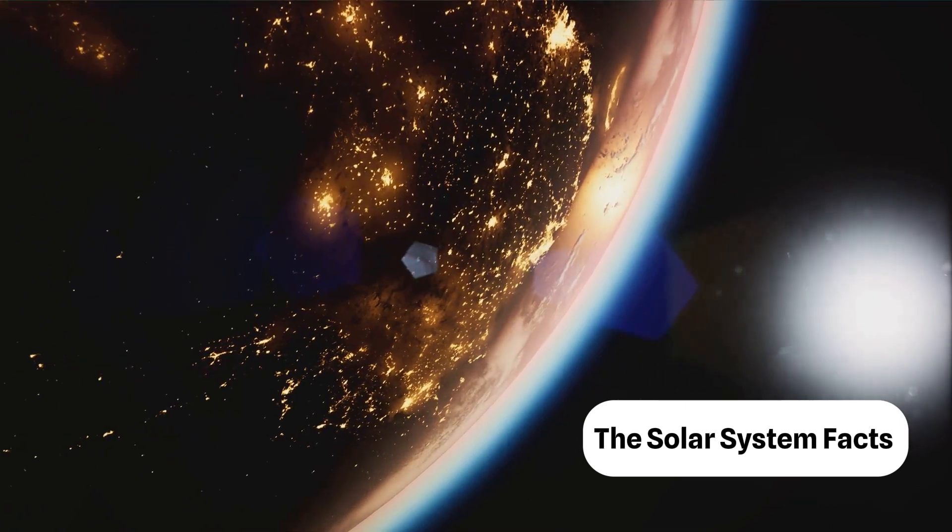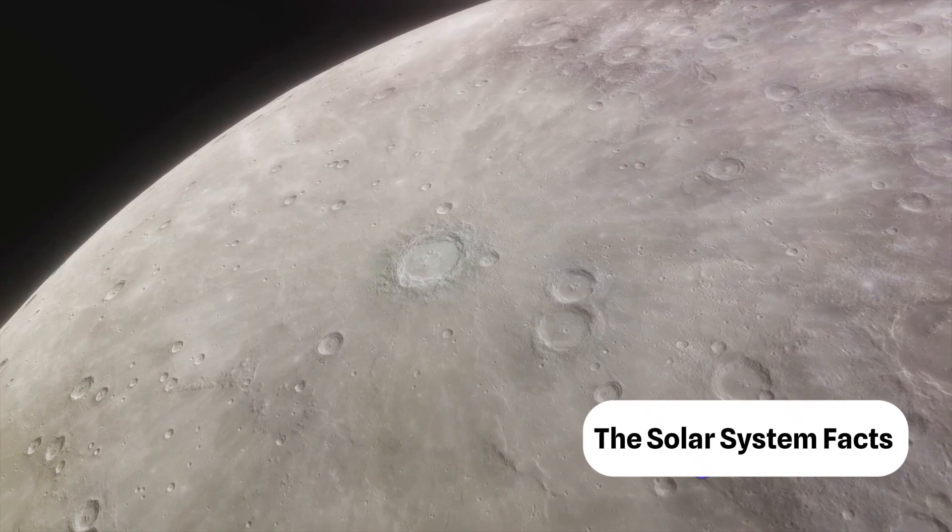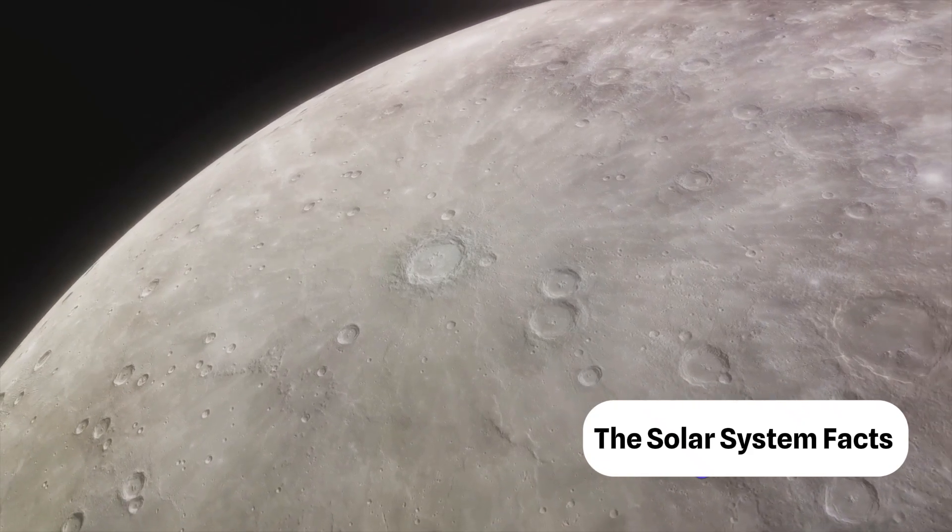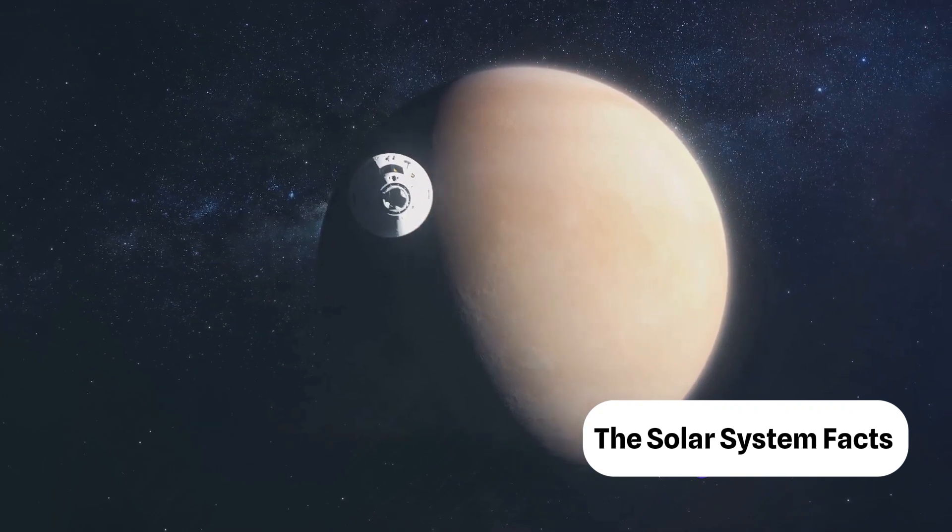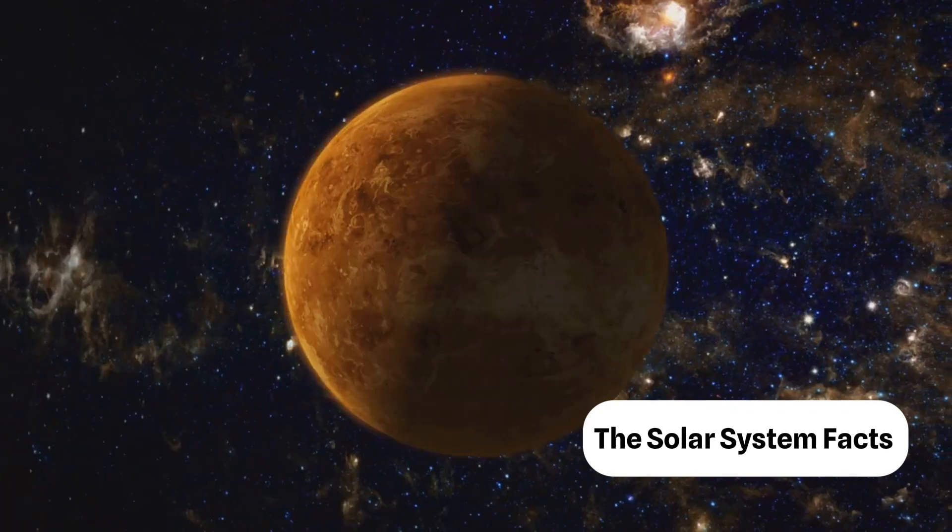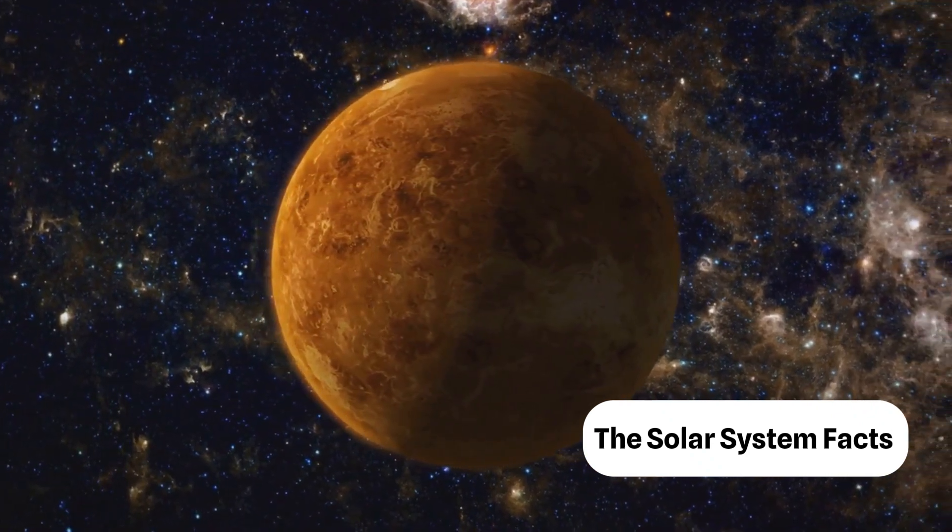Next we find Mercury, the smallest planet and nearest to the sun. It's a world of extremes with scorching days and freezing nights. Venus, our next stop, is often called Earth's twin due to its similar size, but don't let that fool you. Venus is the hottest planet in the solar system with a thick toxic atmosphere that traps heat.